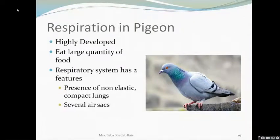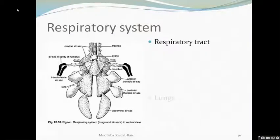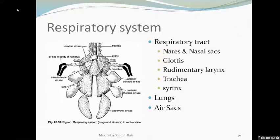When we talk about the respiratory system, the body parts comprise the respiratory tract, the lungs, and the air sacs. This respiratory tract is very extensive and comprises nares, nasal sacs, glottis, rudimentary larynx, trachea, and syrinx. Let us discuss each of these respiratory tract parts one by one.